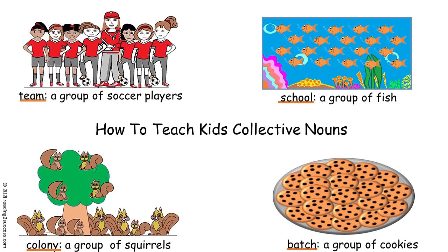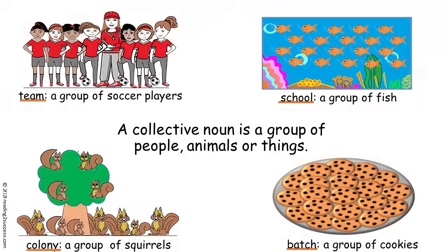Parents, welcome to How to Teach Kids Collective Nouns. A collective noun is a group of people, animals, or things. In our example, the collective noun team is a group of soccer players. The collective noun school is a group of fish. The collective noun colony is a group of squirrels. And the collective noun batch is a group of cookies.